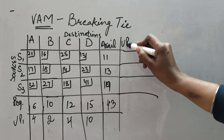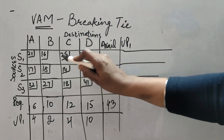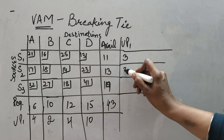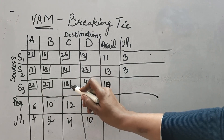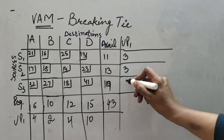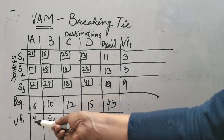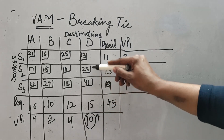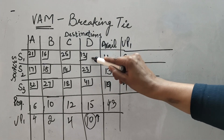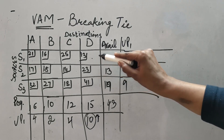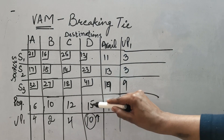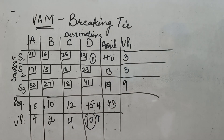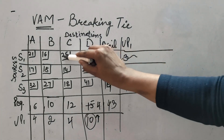We do the same for columns — unit penalty 1. Minimum is 13 and next minimum is 16, so difference is 3. Next column: minimum 14, next minimum 17, difference is 3. Last column: minimum 18, next minimum 27, difference is 9. Out of all unit penalties, we select the highest value — this 10 is the highest. We go inside this column; minimum is 13. Availability is 11 while requirement is 15, so we allot 11 units. Availability becomes 0, requirement becomes 4, and we delete this row.